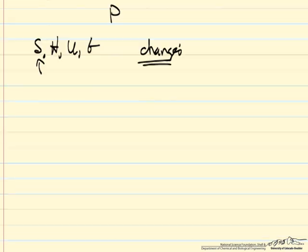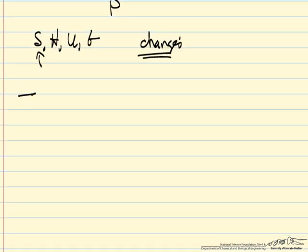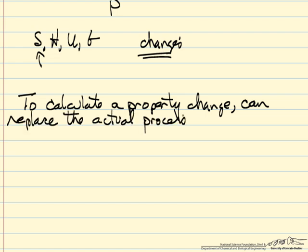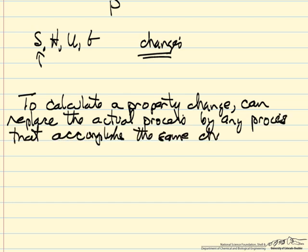So, just to summarize, if we want to calculate a property change, like entropy, enthalpy, internal energy, we can replace the actual path, the actual pathway, the actual process, by any other process that accomplishes the same change in state. Namely, any other process that goes from the same initial to the same final condition we can use because we can pick a process to make our calculations easy.